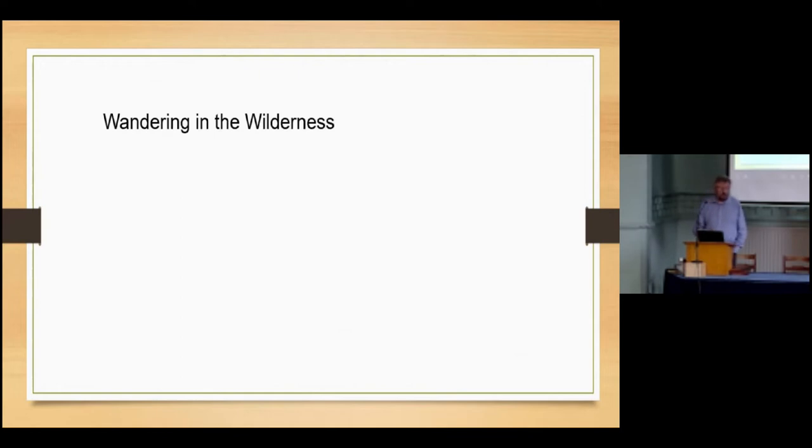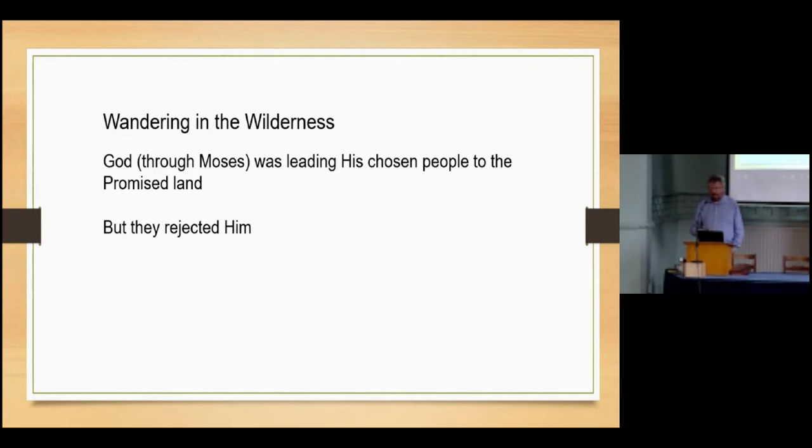After that they wandered in the wilderness. It should have only been a relatively short journey to the land of promise, which was their ultimate destination, but they rebelled against God. God through Moses was leading his people towards that promised land, and they could have certainly got there in under a year, but they rejected him. They rebelled, they even made plans to go back to Egypt, can you believe that? And they made a golden calf as a god that they could worship. And they said, we don't know what's happened to this Moses, he's gone up into this mountain, they hadn't seen him for weeks. So they made plans to appoint a new leader and go back to Egypt, and in so doing they rejected God.